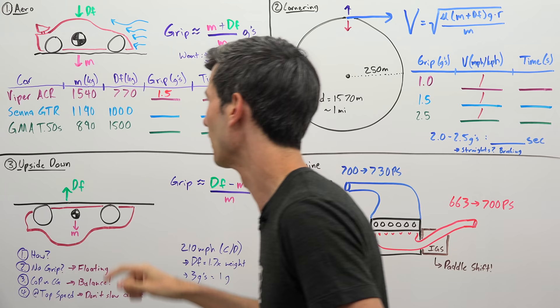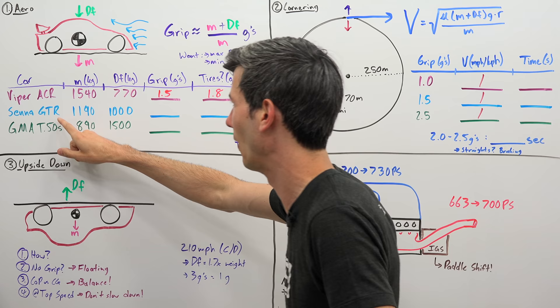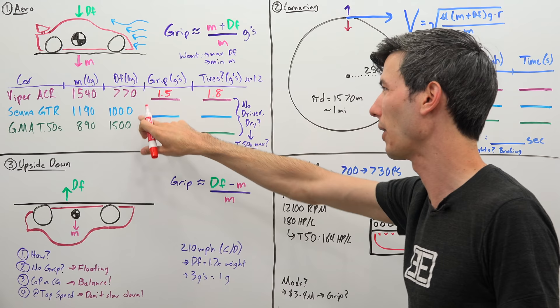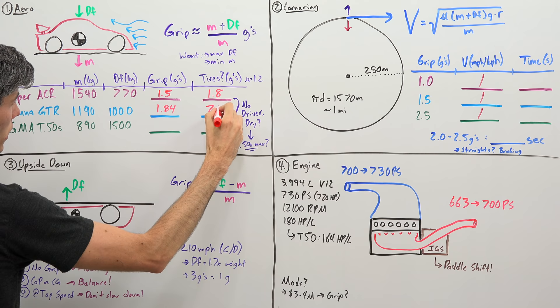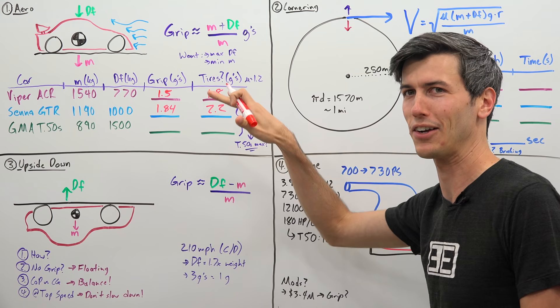Now let's compare that to an absurd track-only car, the Senna GTR. The thing only weighs about 1200 kilograms dry weight and has about a thousand kilograms of downforce. Using our same simple equation, we're at 1.84 G's. If we have super sticky tires, you know, 2.2 G's of grip. This is a track-only car capable of somewhere around 2 G's of grip, which is insane.